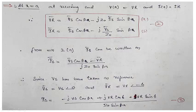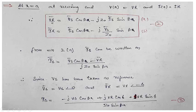At x equal to A, that means at the far end, that is the receiving end, V(A) equals VR and I(A) equals IR. So I can write: VR equals Vs·cos(β·A) minus j·Z₀·Is·sin(β·A), and IR equals Is·cos(β·A) minus j·(Vs/Z₀)·sin(β·A). From the first equation, solving for Is: Is equals [Vs·cos(β·A) minus VR] divided by [j·Z₀·sin(β·A)].